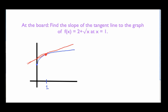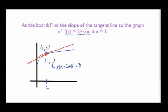So what's the slope of that line? We need several things to calculate it. First, I need to know the coordinates of this point — not just the x-coordinate, which is 1, but also the y-coordinate. The y-coordinate at x = 1 is f(1) = 2 + √1 = 3. So the point where the tangent line touches the graph is (1, 3). We don't have a direct way to get the tangent slope yet, so we get it indirectly.